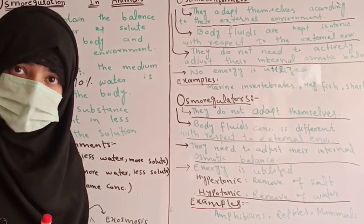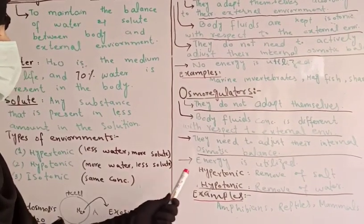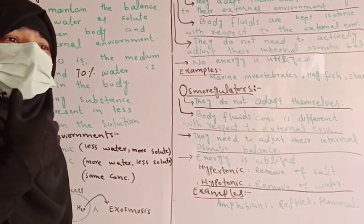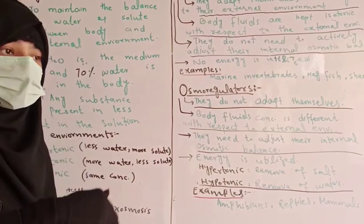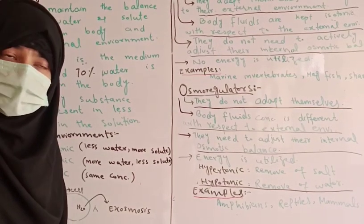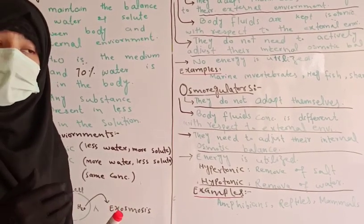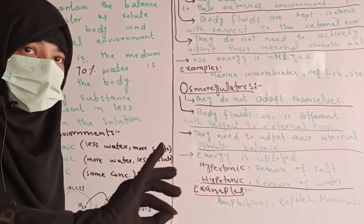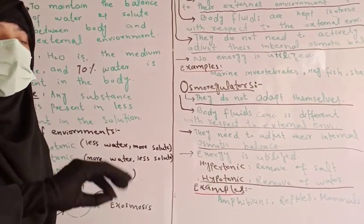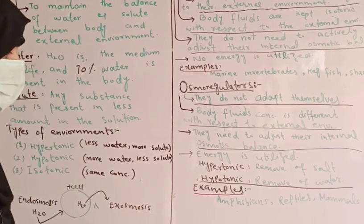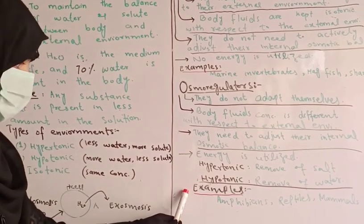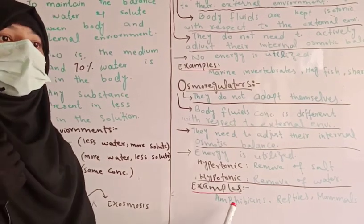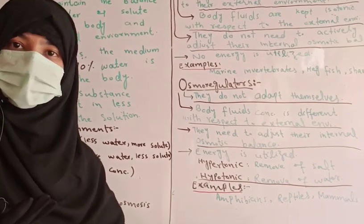For example, if we talk about a hypertonic environment, in high concentration you need to remove salt from the body against the concentration gradient, and for that you need to utilize energy. Examples of Osmoregulators include amphibians, reptiles, and mammals.